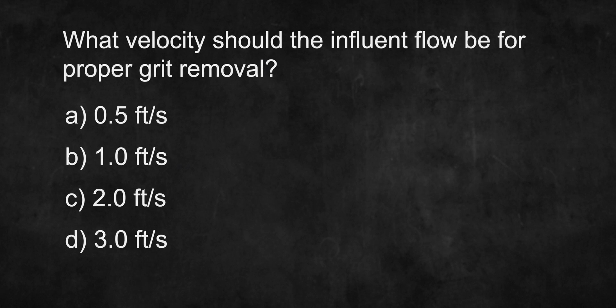In feet per second, what velocity should the influent flow be for proper grit removal? A: 0.5, B: 1.0, C: 2.0, D: 3.0.